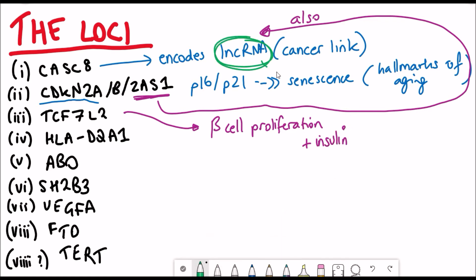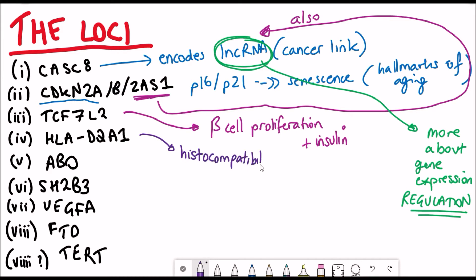Then there's the HLA-DQA1 loci, which is encoding the histocompatibility complex components, and that's linked with chronic inflammation, again, something that's associated with the hallmarks of aging.